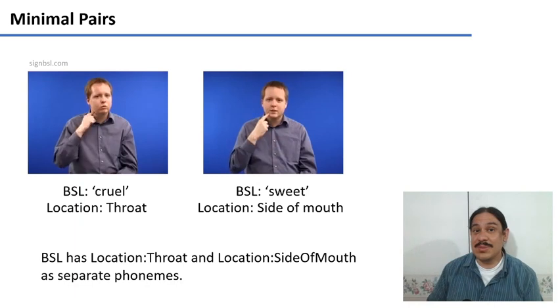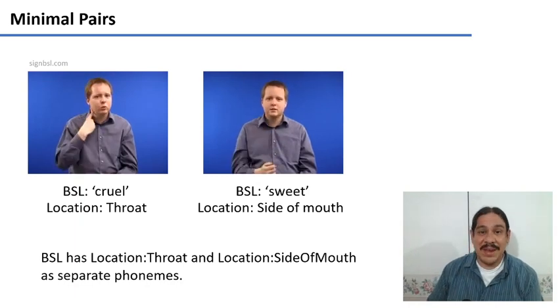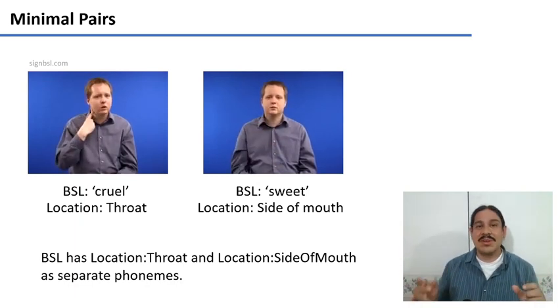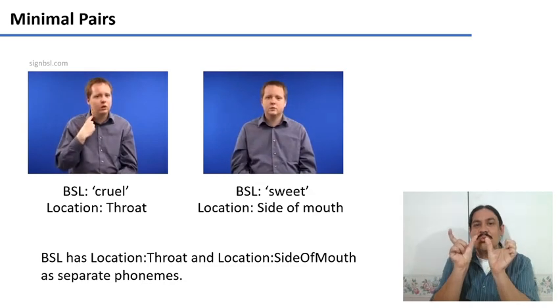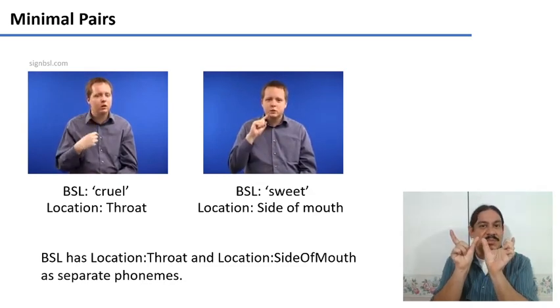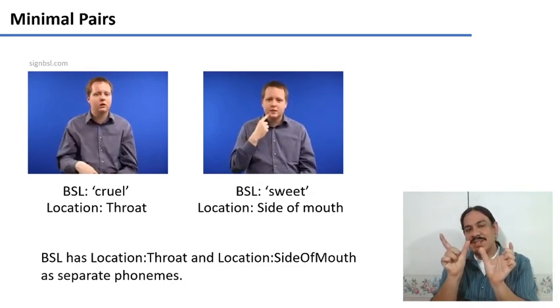Okay, so the very first one, the most basic one is minimal pairs. Again, minimal pairs are words where there's only one sound that's different between them, like pat and bat.